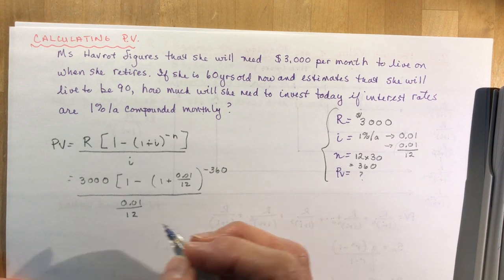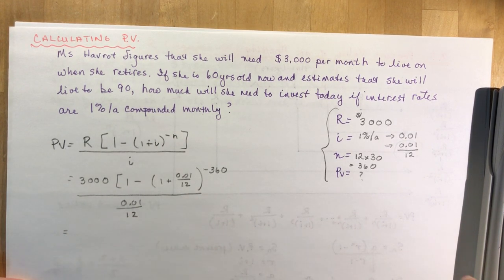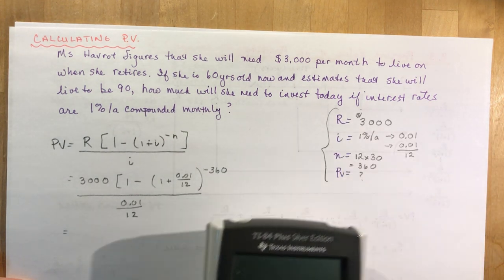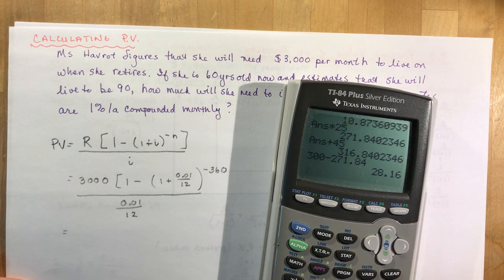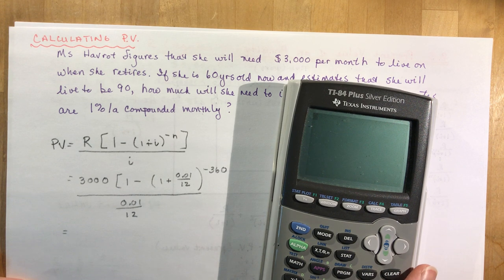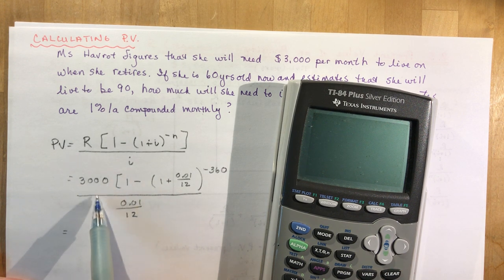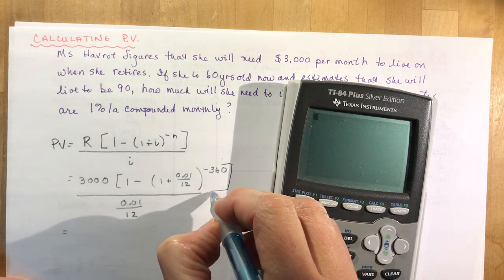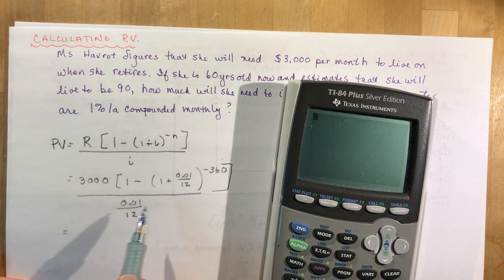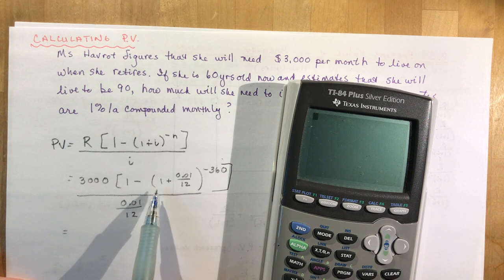This may look a little intimidating in terms of using your calculator, but I would do it in parts. Sometimes calculators do weird things if you don't use proper brackets. For instance, here you would need like a double bracket, right? Because this should be another bracket there. If you mess that up then you're going to be in trouble.